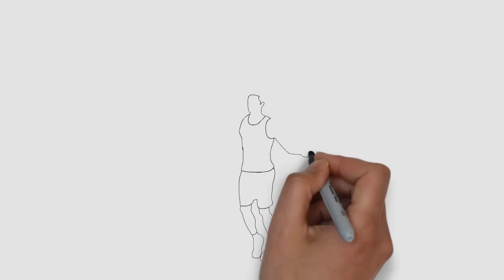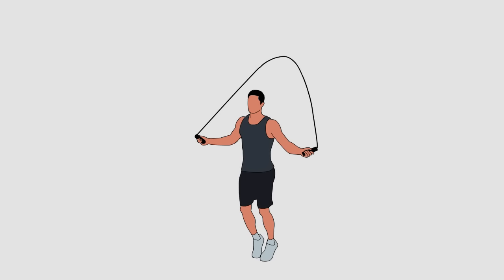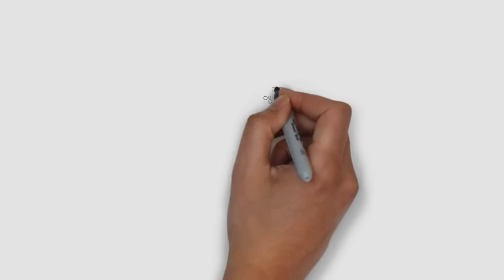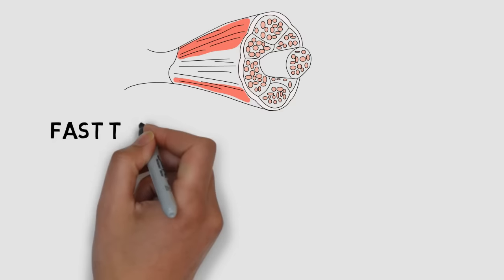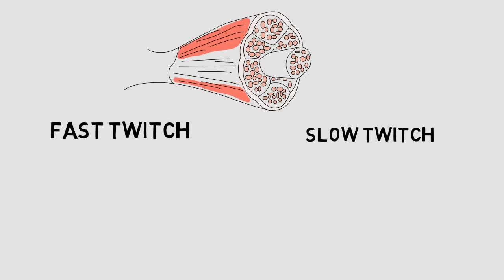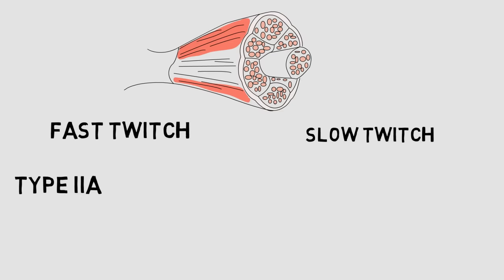You see, the secret to a great vertical jump is not just doing a lot of jumping. You've probably heard that muscle fibers are divided into fast twitch and slow twitch. What most people don't know is that there are two classifications of fast twitch.